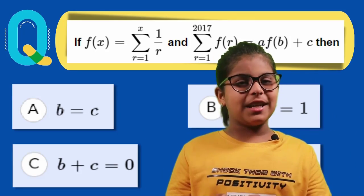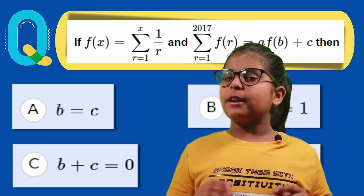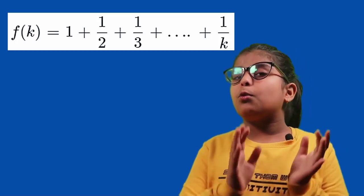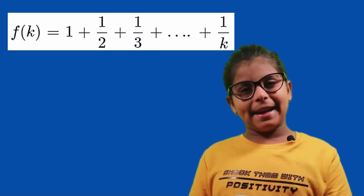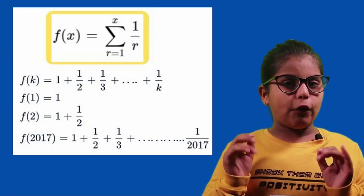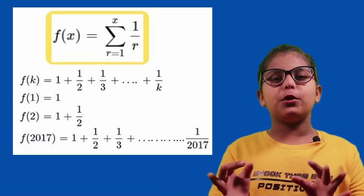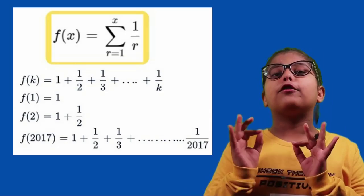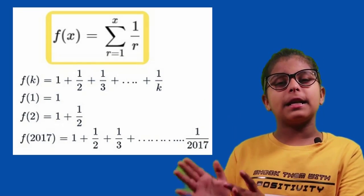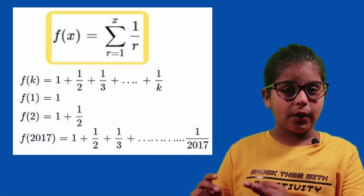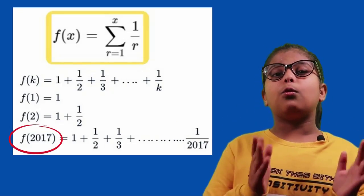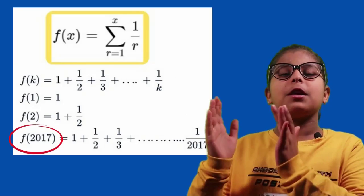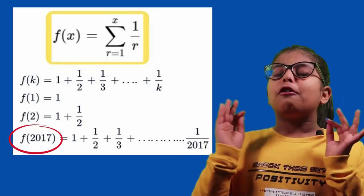Now it's time to see the question carefully and we have some given information. Here we have f of k is equal to 1 plus 1 by 2 plus 1 by 3 up to 1 by k. It means f of 1 is equal to 1, f of 2 is equal to 1 plus 1 by 2, f of 3 is equal to 1 plus 1 by 2 plus 1 by 3. And similarly, we will do for f of 2017 is equal to 1 plus 1 by 2 plus 1 by 3 up to 1 by 2017.